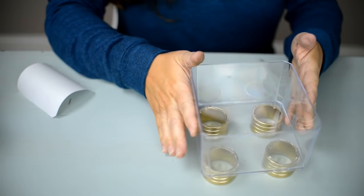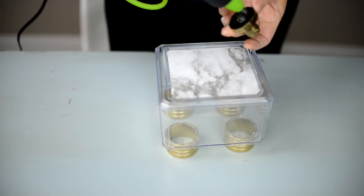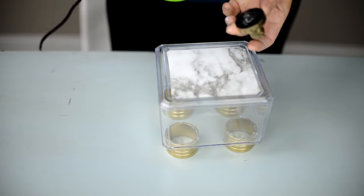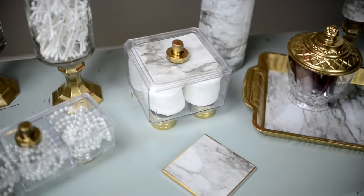From there, I'm just going to put the lid on, and then I'm going to take my wine stopper handle and put some hot glue and glue it in place. You could put anything that you like in this container.